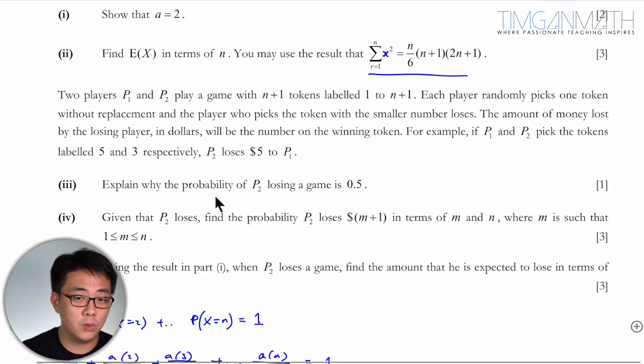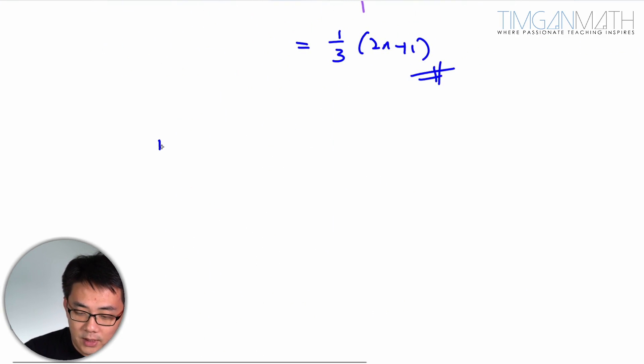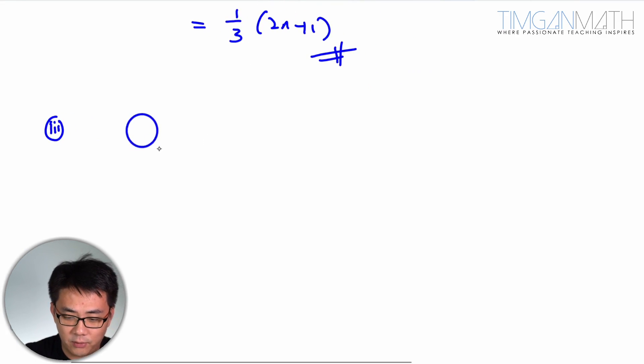So part 3, explain why the probability of P2 losing a game is 0.5. Now if the game has a 50% chance of losing, meaning you have 50% chance of winning as well, the game is fair. So let's try and understand this from perspective, right?